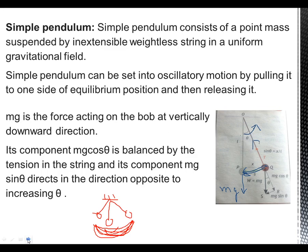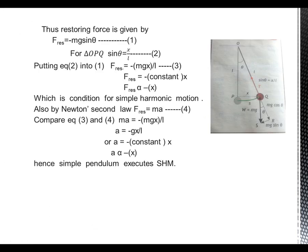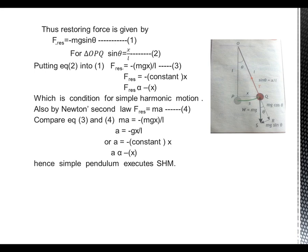So the forces acting on the simple pendulum divide into two parts: mg cos θ and mg sin θ. The restoring force mg sin θ actually brings the bob back to its original position. A minus sign is attached to it because it is a restoring force opposite to the applied force — the force I applied when I moved the body from its initial position to point Q.